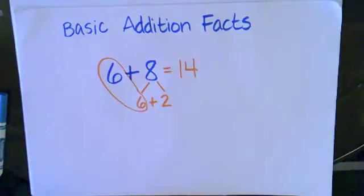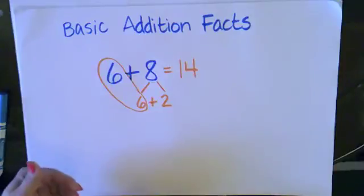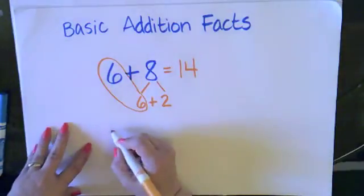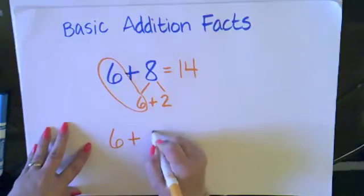Now, similarly, if doubles isn't something that is a strategy that you would think of naturally, another way that you could think of adding 6 plus 8 is by making a friendly 10. So if I have, again, if I have 6 plus 8...